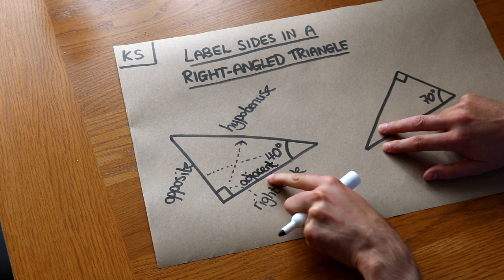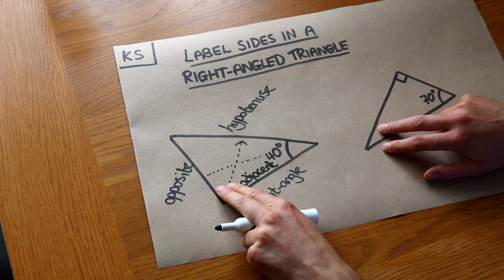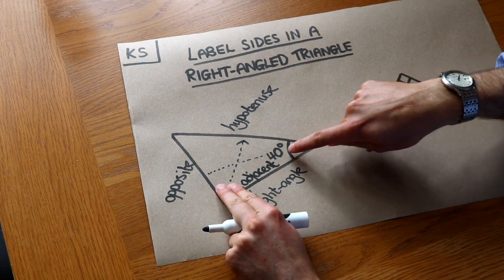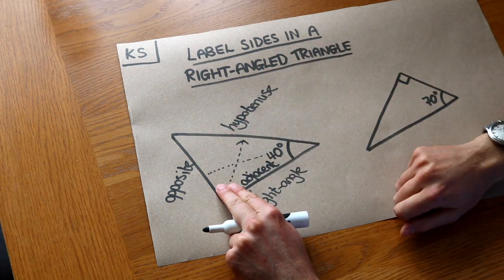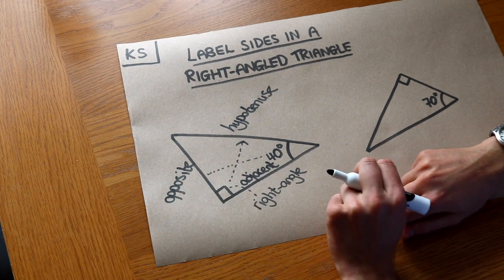And notice these sides are labeled relative to this angle here. So forget the 90 degrees, we look at the angle that's given in the triangle, whether it's this angle or this one, and that's how we decide how to label the opposite and the adjacent.